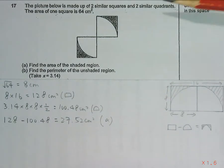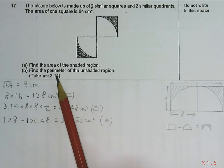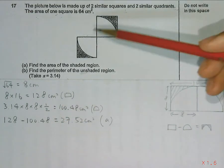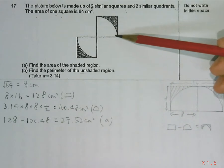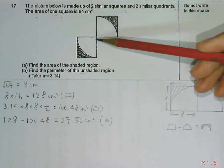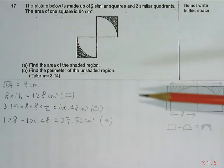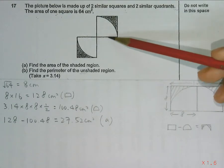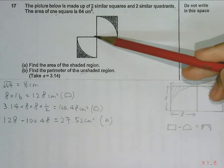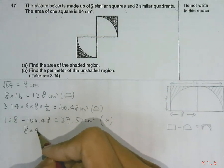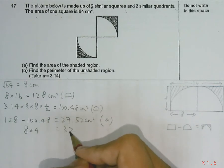Now moving on to Part B. It asks for the perimeter of the unshaded region. So that will be this side, plus this side, plus this side, and also this side, plus this side, plus this side. Since we know this length is already 8, and there are a total of 4 of it, we can find 8 times 4, giving us 32 cm.